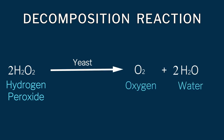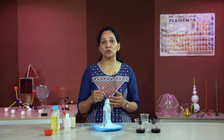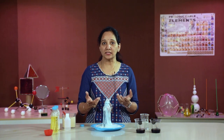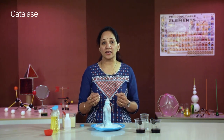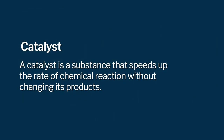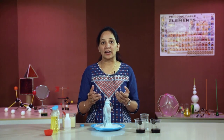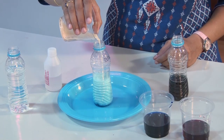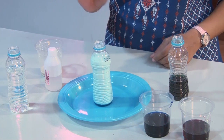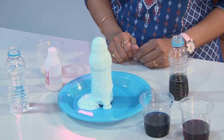The decomposition happens with the help of yeast as a catalyst. Yeast contains an enzyme called catalase — it is called catalase because it works as a catalyst in this reaction. A catalyst is a substance that speeds up the rate of a chemical reaction without changing its products. The yeast is added to the hydrogen peroxide to speed up the reaction. The catalase enzyme speeds up the breaking down of hydrogen peroxide, producing oxygen and water more quickly. The oxygen gets trapped by the dish-washing detergent as many tiny bubbles.